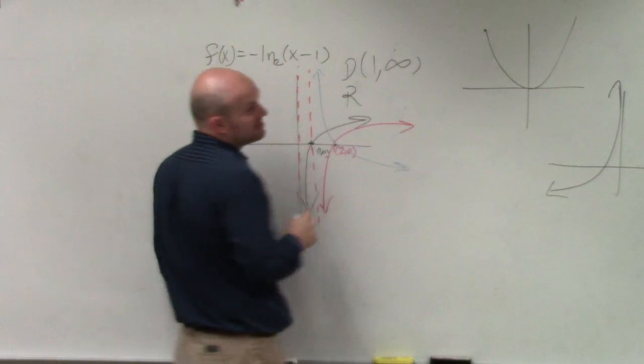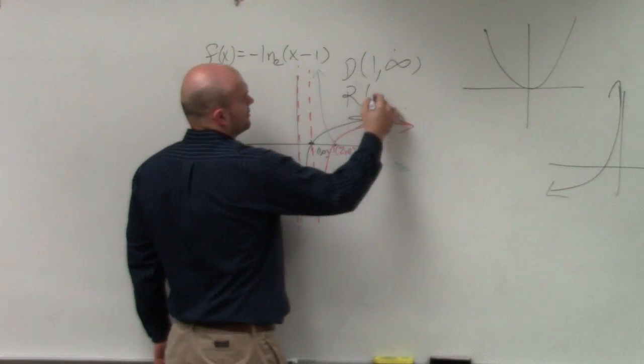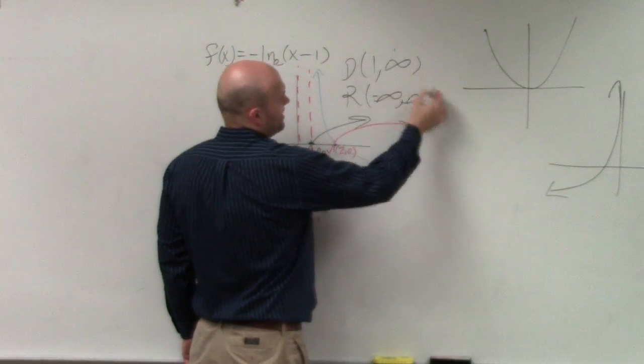The range. And remember, it doesn't touch 1. So therefore, the range. How low does this graph go? Negative infinity. How high does it go? Positive infinity.